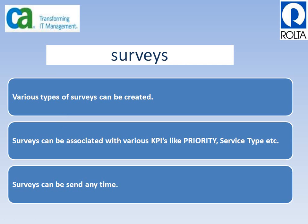A wide range of surveys can be created in CA Service Desk, for example a set of questions or just a feedback form or both. Surveys can be associated with various KPIs like priority and service types. Different types of surveys can be associated with different KPIs - for example, a survey called 'Rate the Technician' can be associated with priority one, or a survey called 'Feedback' with a platinum service type. By default, surveys are configured to be sent only when a request is closed or resolved.